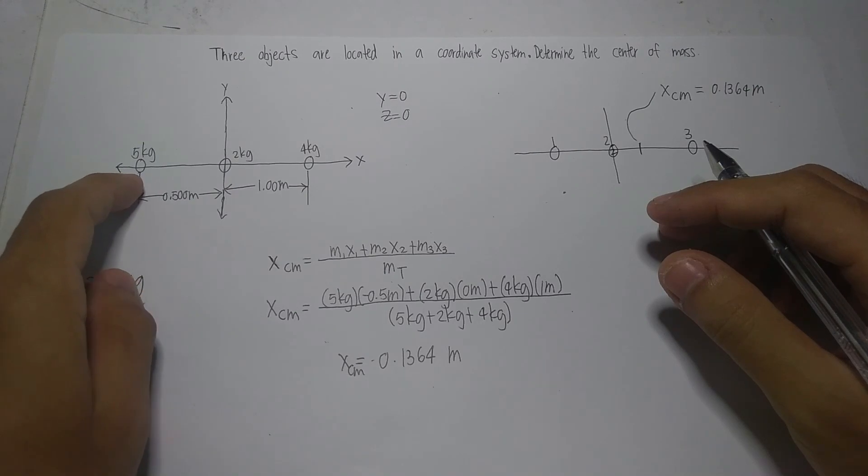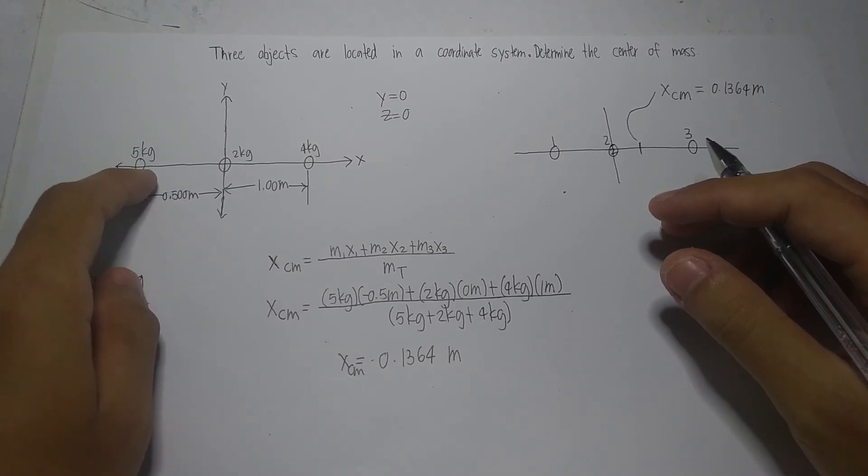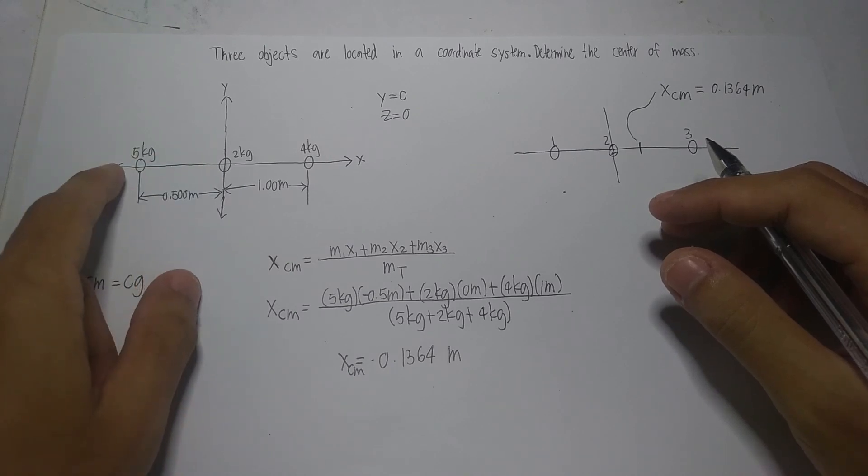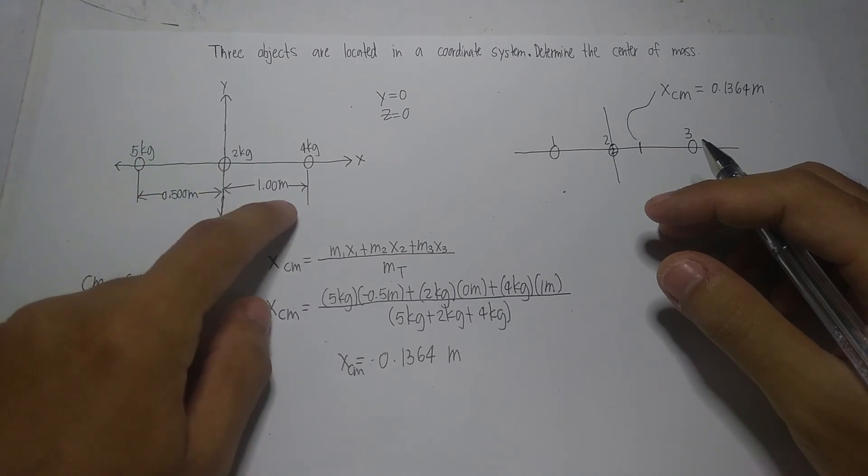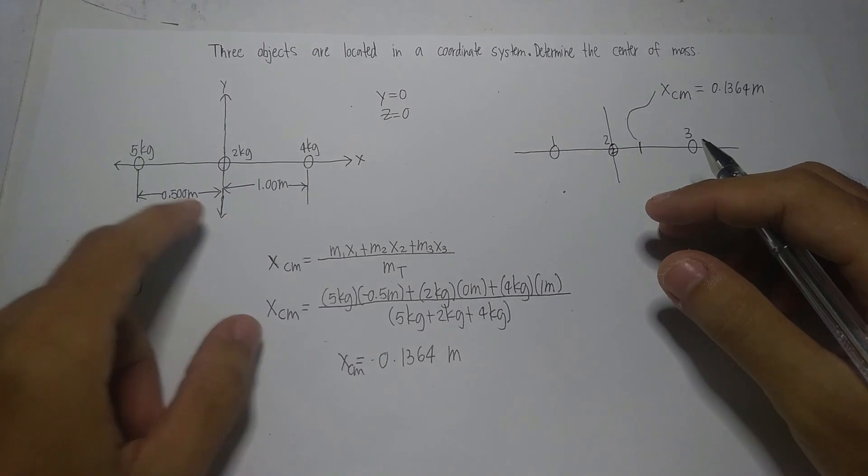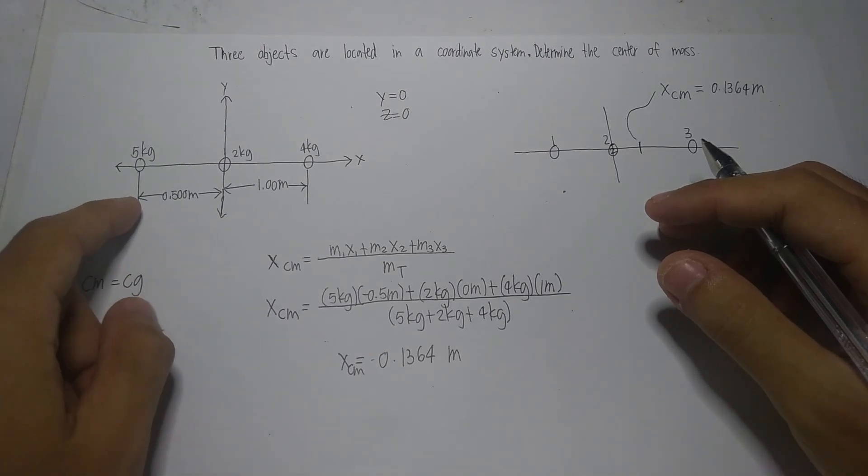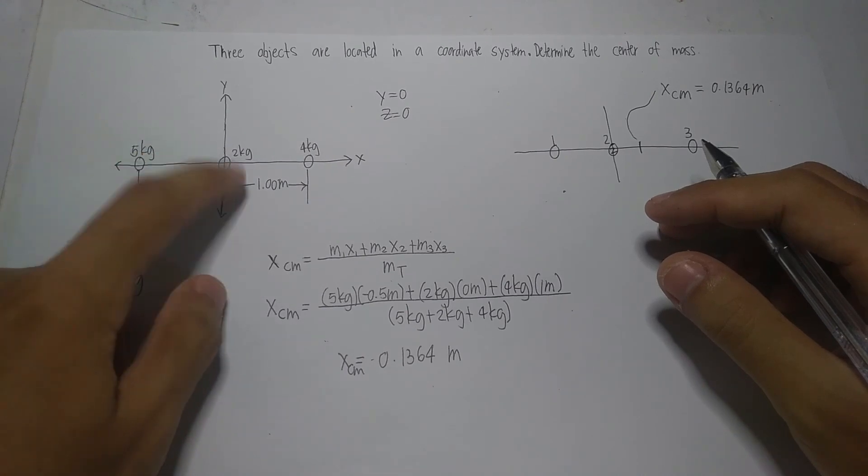As you can see, the objects involved in the system have different masses from one another. Thus they have distinct masses. Observing this figure, we can also determine that there is a distance between object 1, 2, and 3.